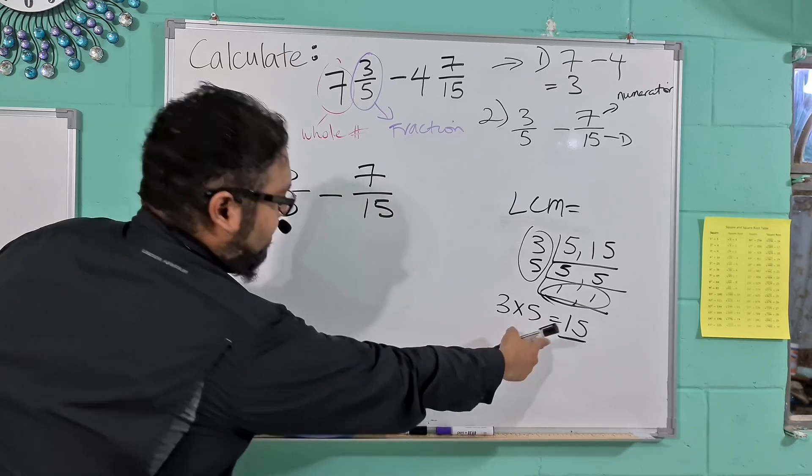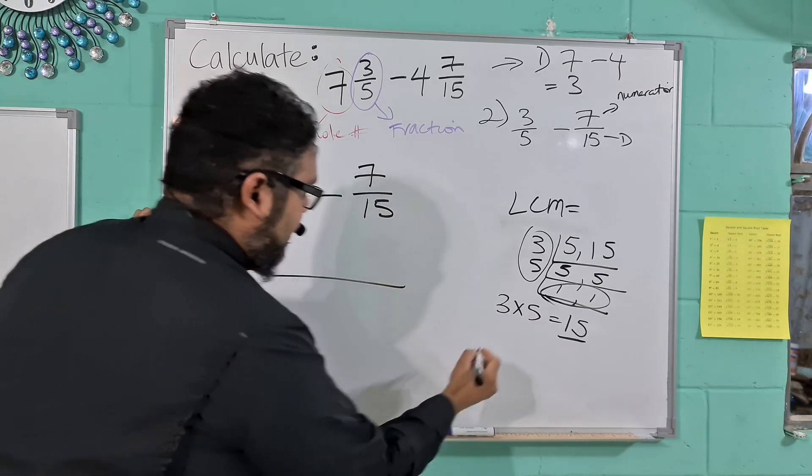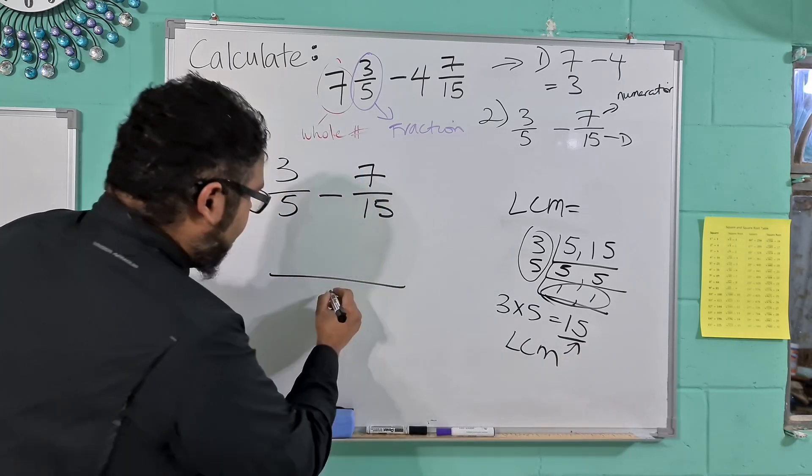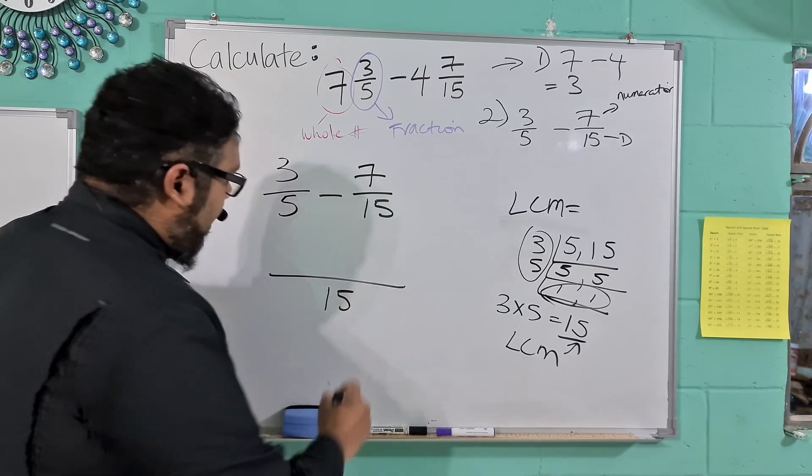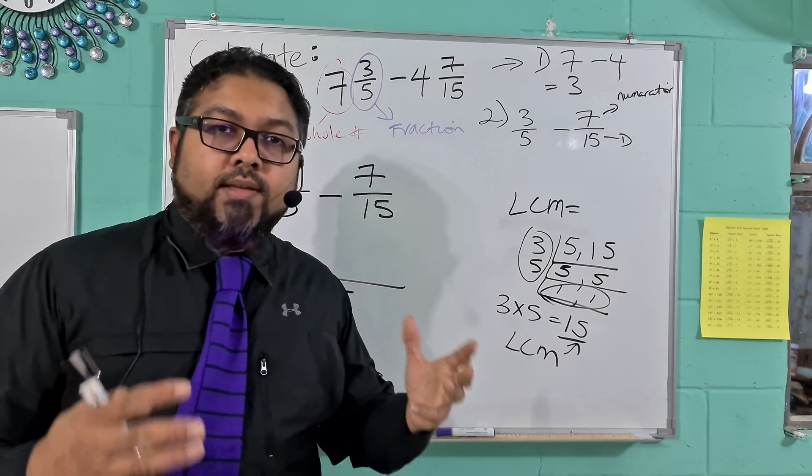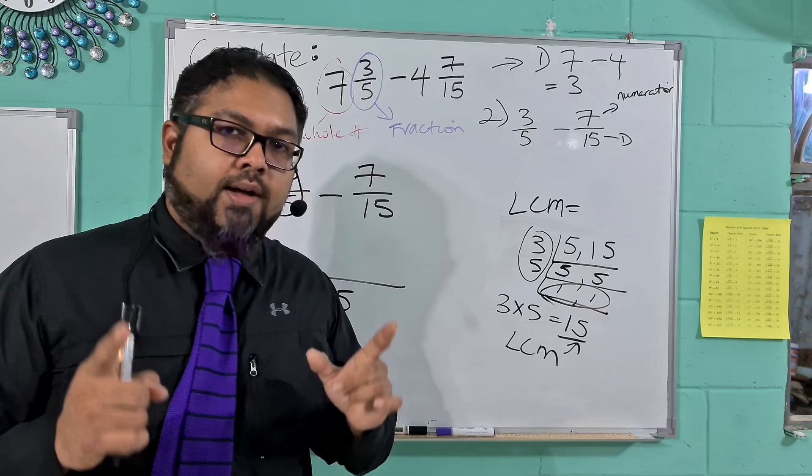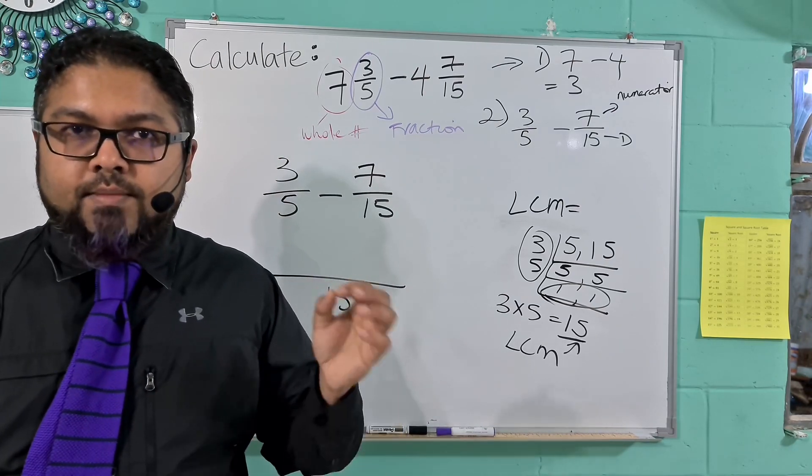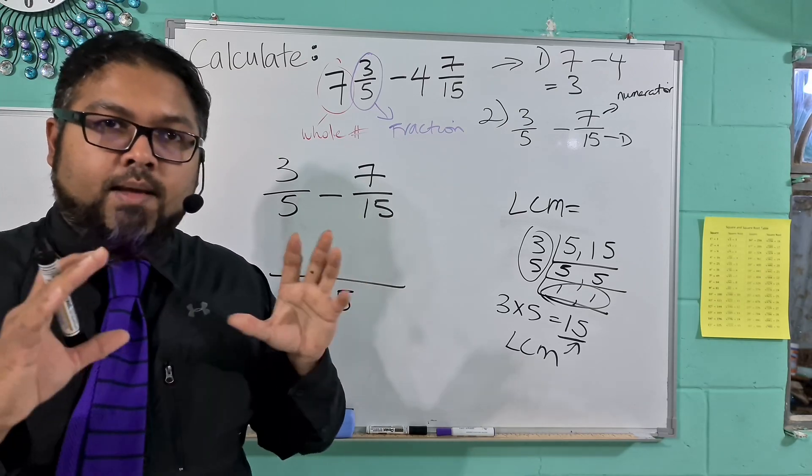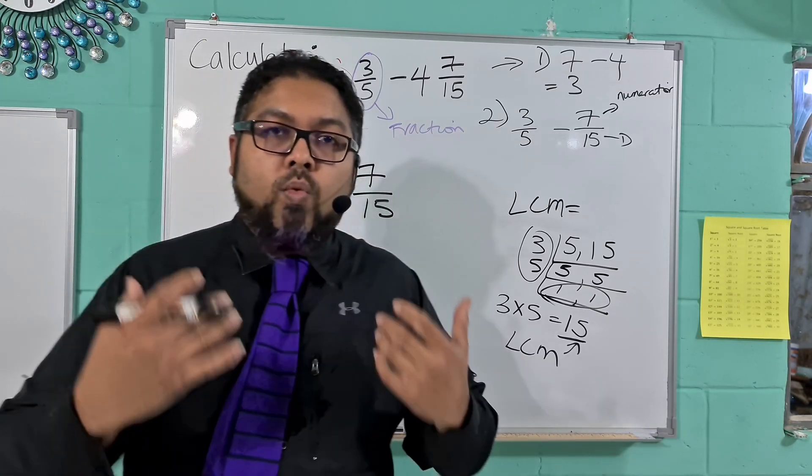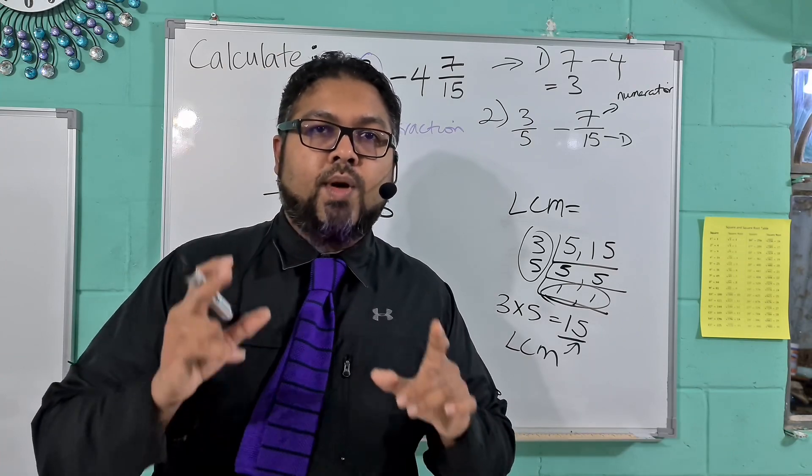The LCM as being 15. So we put the LCM here. The LCM, if you guys look carefully, is going to be the new denominator. So you guys will see this, we're going to basically make both of these fractions equivalent, and 15 will be the brand new denominator.